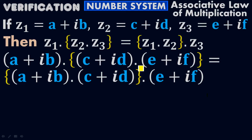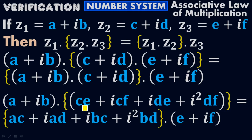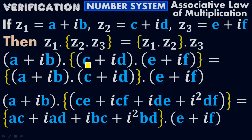On the left side, first take the product of the inner two terms (C + iD)(E + iF). This gives CE + iCF + iDE + i²DF. Note that iota times iota equals i². Similarly on the right side, first take the product of (A + iB)(C + iD), giving AC + iAD + iBC + i²BD.